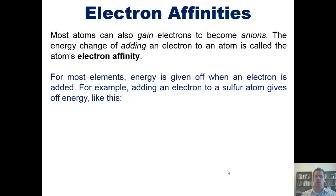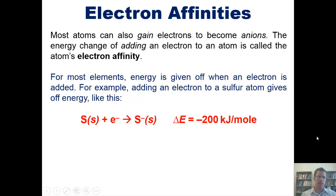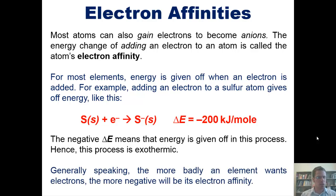For example, adding an electron to sulfur gives off energy, as shown in this equation. We have elemental sulfur and add an electron to turn it into sulfide 1 minus. The delta E is negative 200 kJ per mole. This negative delta E value means that energy is given off during this process. Hence, this process is exothermic. Generally speaking, the more badly an element wants electrons, the more negative will be its electron affinity.